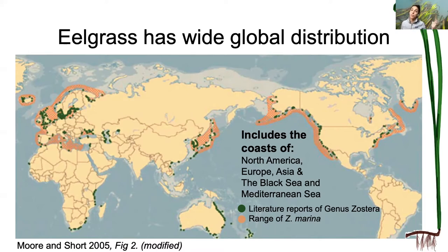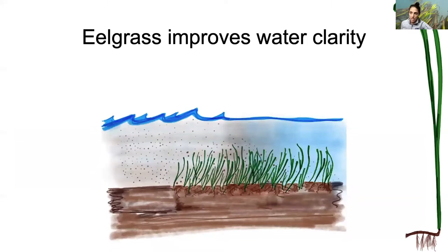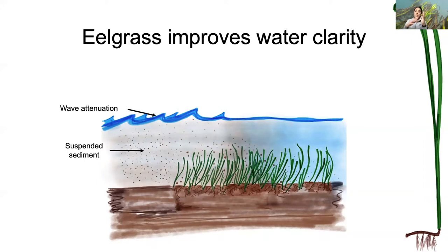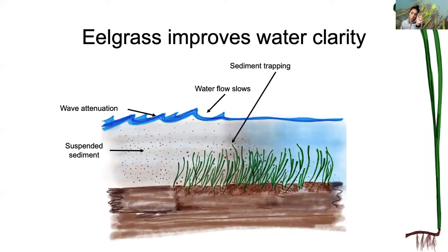Imagine the tide is rising and the water moving into a bay or estuary is filled with coarse and fine particles of sediment. The seagrass itself acts as a natural storm buffer or wave buffer and slows water flow. If you imagine the water flowing and hitting a wall of seagrass and slowing — that wave attenuation slows water flow and allows the coarser particulates in the water column to settle out, improving water clarity.